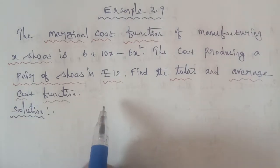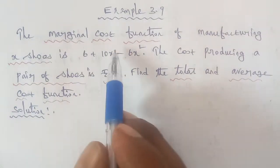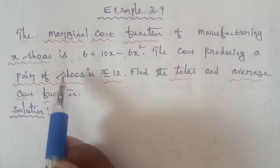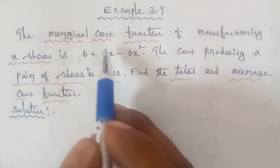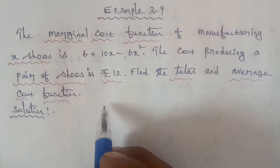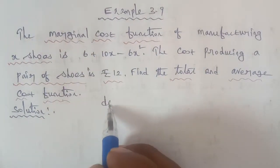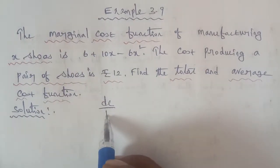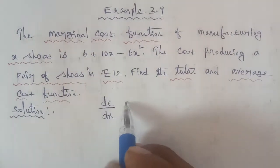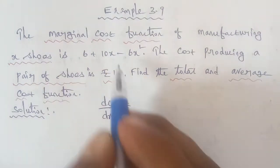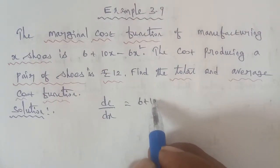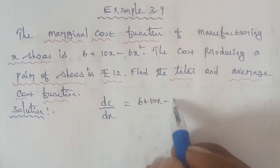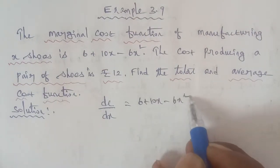The given question: the marginal cost function for X shoes — that is, the marginal cost function symbol, DC by DX — so this equation is 6 plus 10X minus 6X square.